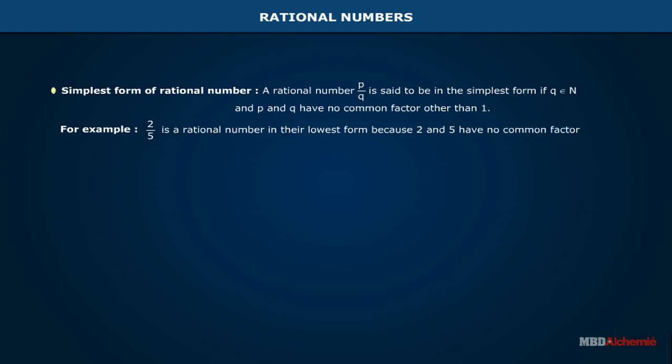For example, 2 by 5 is a rational number in their lowest form because 2 and 5 have no common factor other than 1.